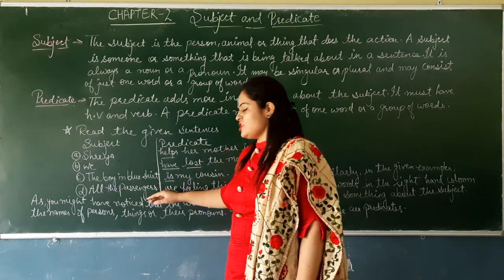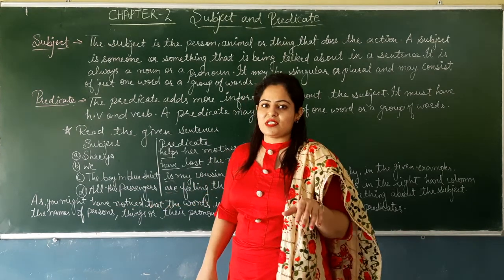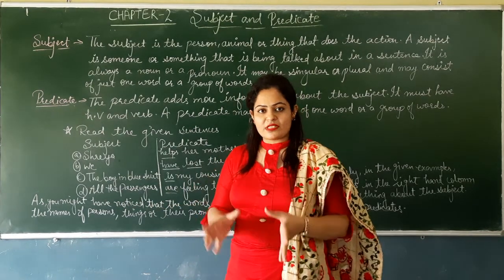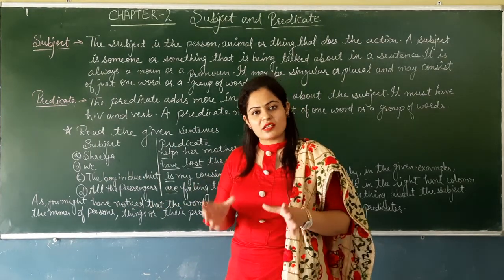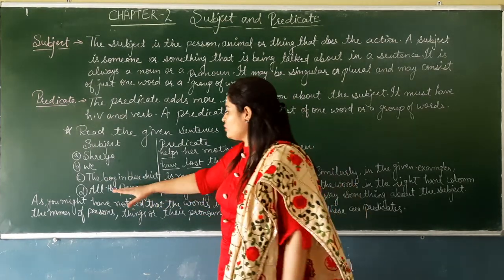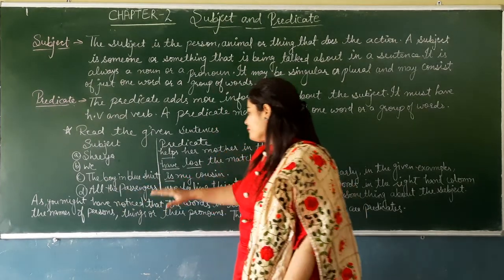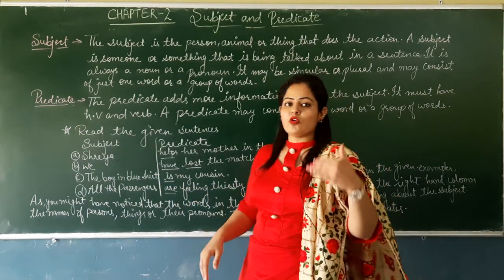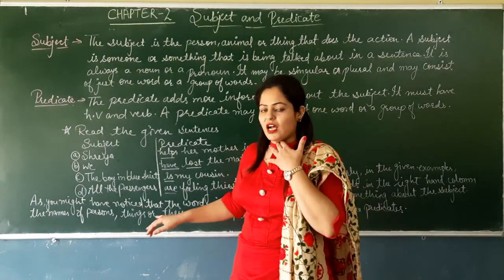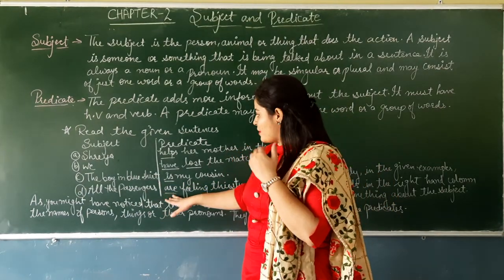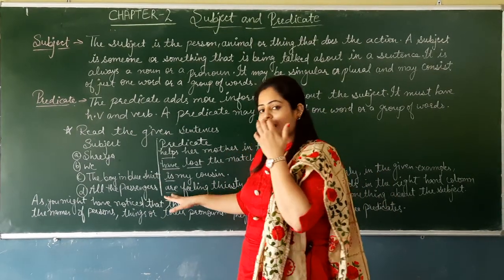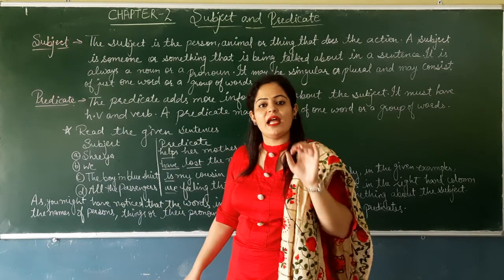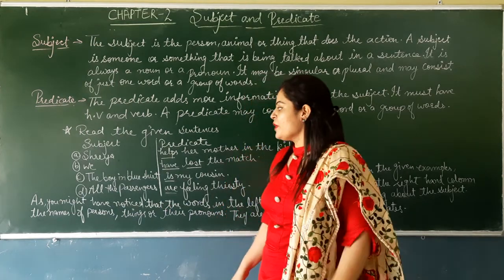Fourth example — 'All the passengers.' Saare passengers — passengers kya hai? Sangyya hai, noun. Predicate hai: 'are feeling thirsty' — unko pyaas lag rahi hai. 'Are' se yahan hamara predicate shuru hota hai — 'are' kya hai? Helping verb.